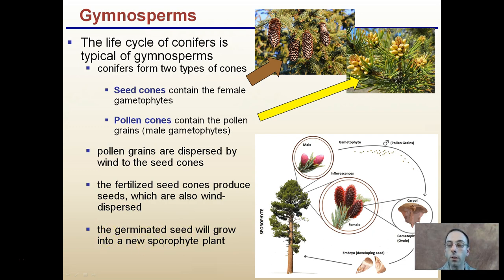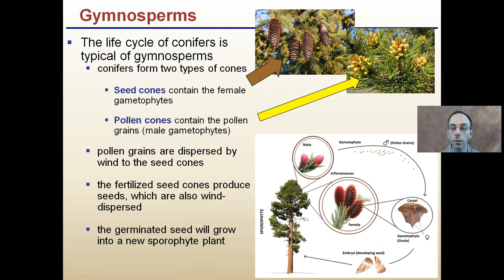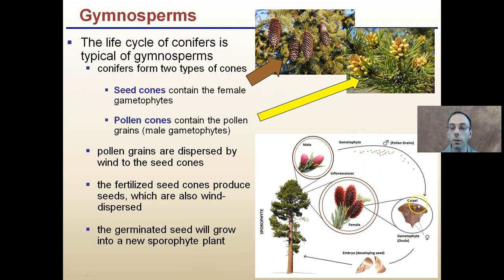If you've ever looked at pine trees in the springtime and it looks like smoke is pouring off them, it's literally the pollen. These conifers produce a massive amount of pollen and disperse it through the air, relying on sheer mass production — by odds — to get male pollen grains to find the female ovule. They produce tons and tons of pollen, almost like smoke coming off a tree, to find that female ovule.